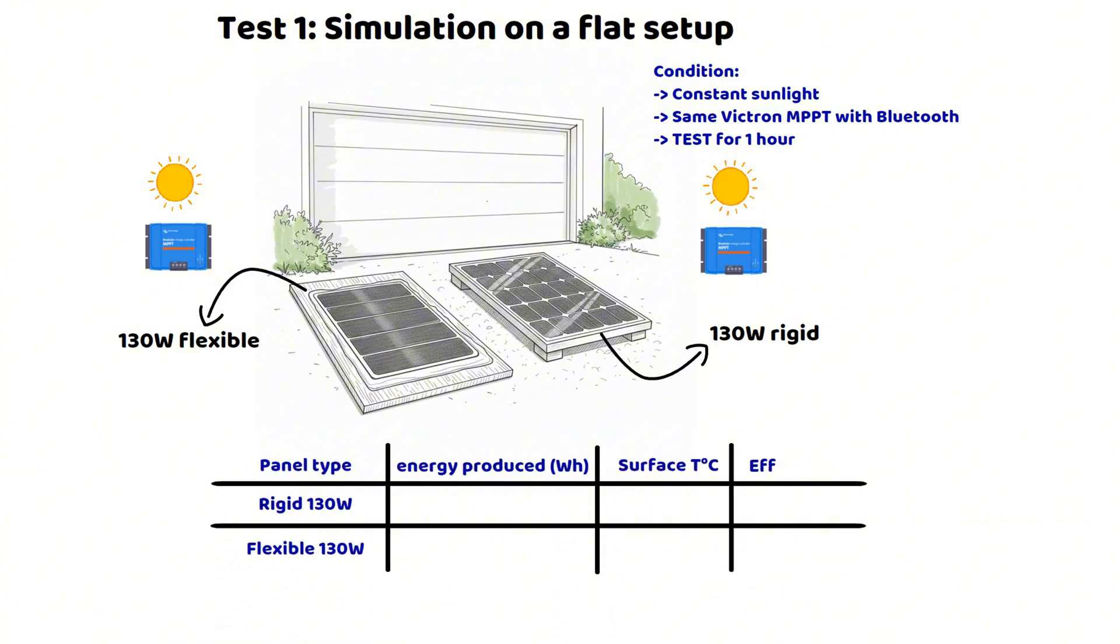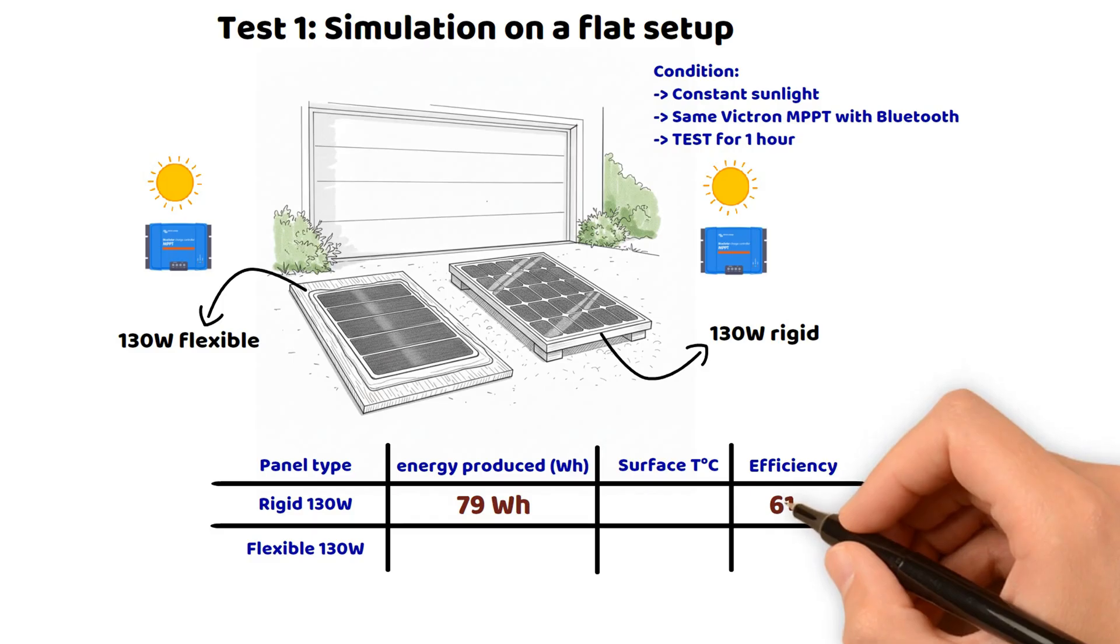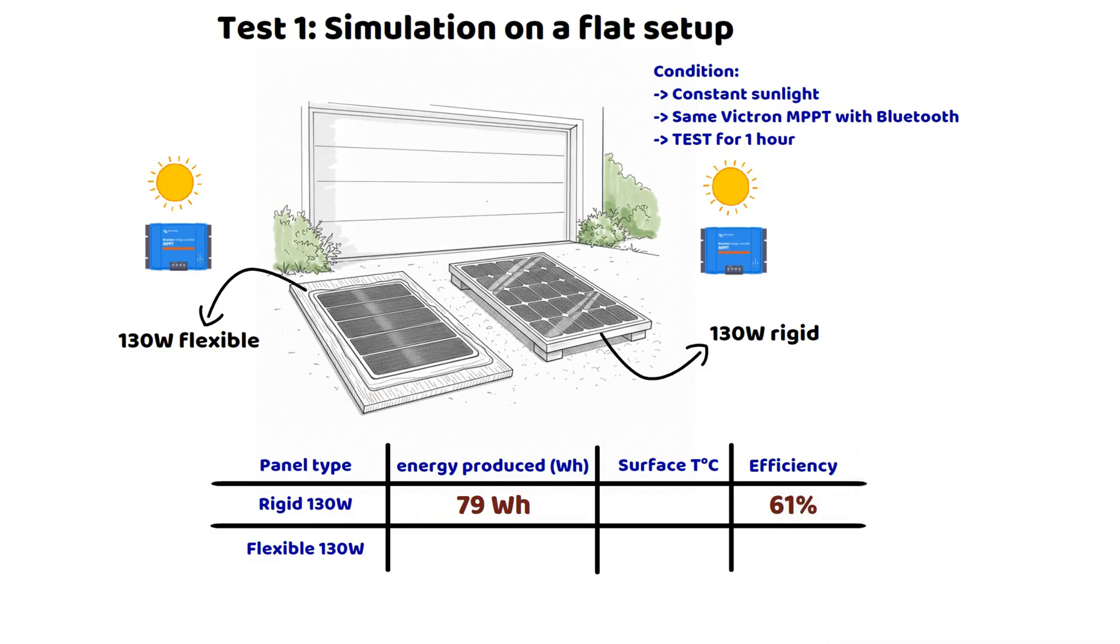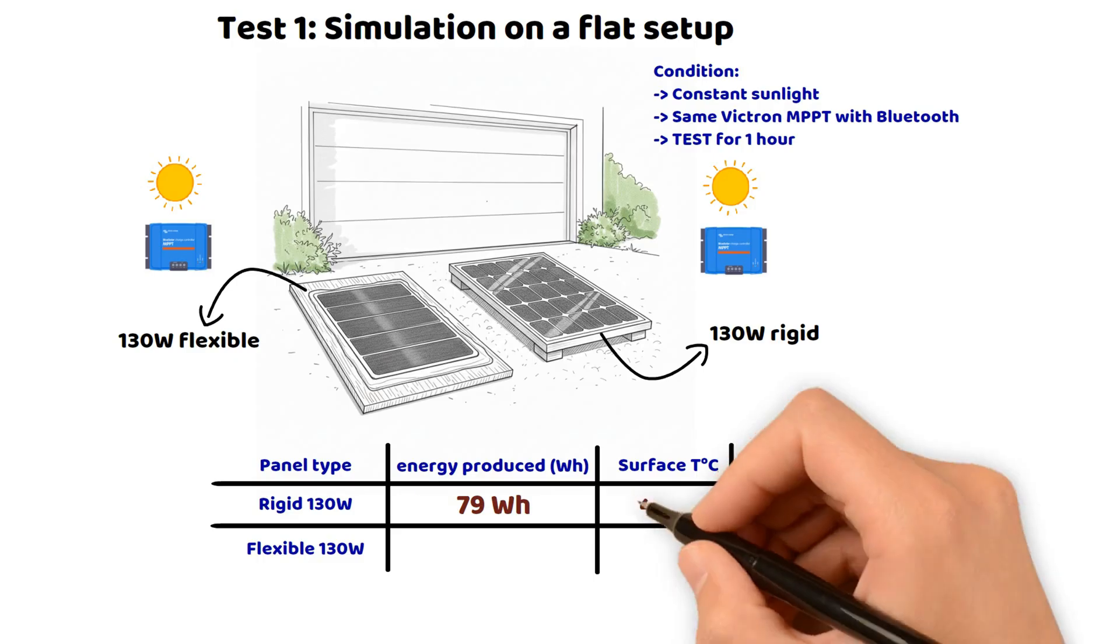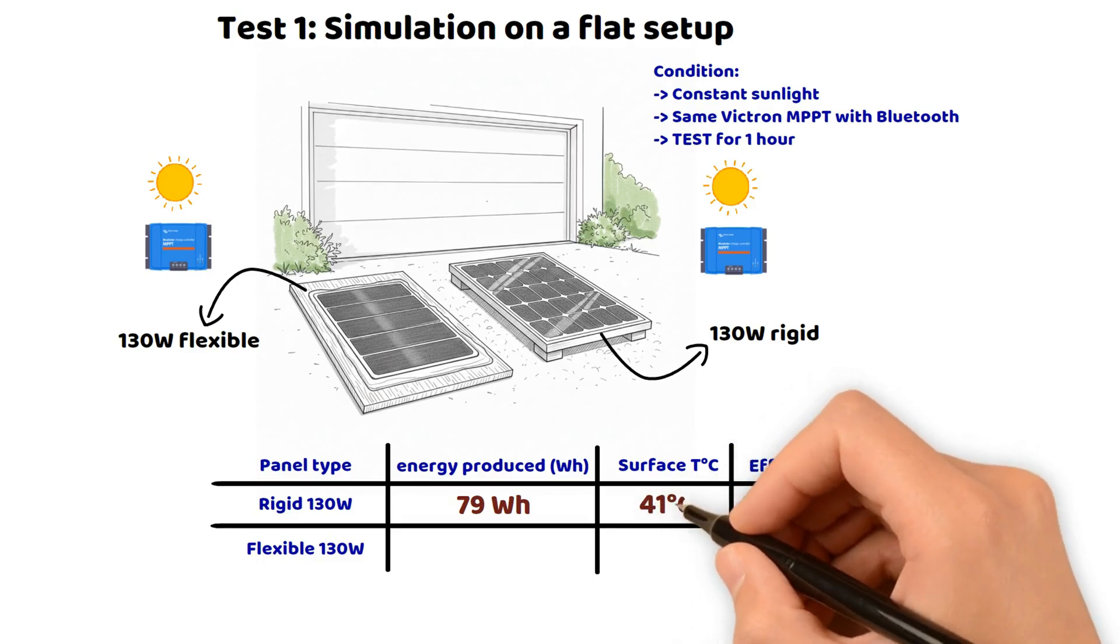Result, for the rigid panel we had an average of 79 watt hours compared to a maximum power of 130 watts as advertised. It is already interesting to point out that you lose quite a lot when placing a solar panel flat. This gives here a little more than 60% efficiency. The last important measurement in this test is the temperature, which was recorded at 41 degrees.